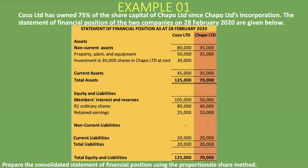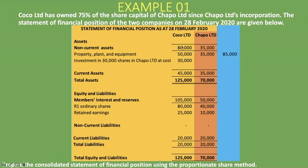Let's go line by line. First, looking at non-current assets — property, plant, and equipment. We are not told anything specific about it, so we just add the two together: 50,000 rand plus 35,000 rand. Remember, we add everything even though the parent company only owns 75%. Adding the parent's 50,000 rand and the subsidiary's 35,000 rand gives us 85,000 rand — shown here in blue in the consolidated statement of financial position.